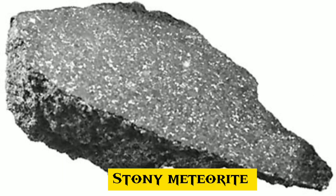4. A stony meteorite is any meteorite consisting largely of rock-forming silicate minerals. Stony meteorites, which are the most abundant kind, are divided into two groups: chondrites and achondrites. Although most achondrites are fragments of asteroids, a few come from the Moon or Mars.